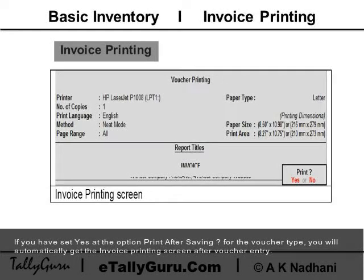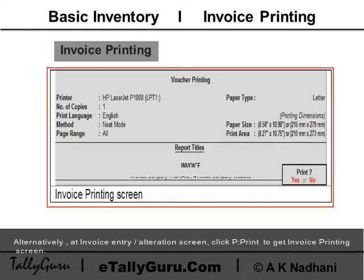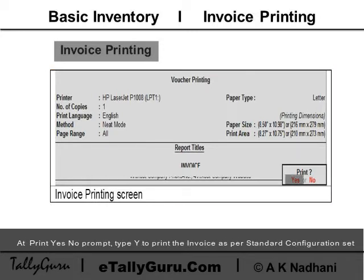For invoice printing, if you have set 'Yes' at the option 'Print After Saving' for the voucher type, you will automatically get the invoice printing screen after voucher entry. Alternatively, at the invoice entry or alteration screen, click the Pre-Print button to get the invoice printing screen.